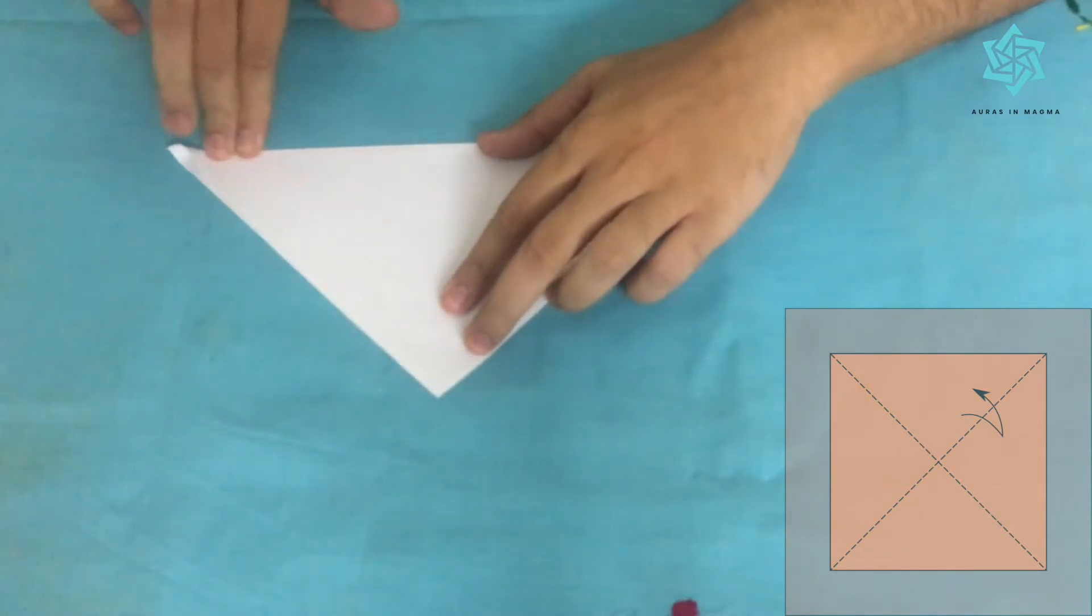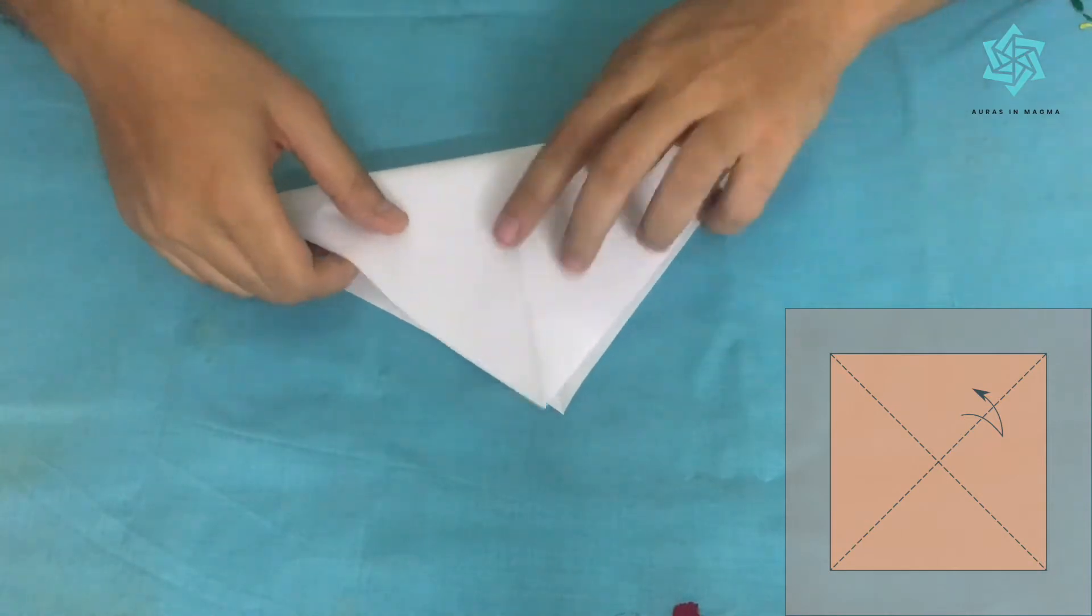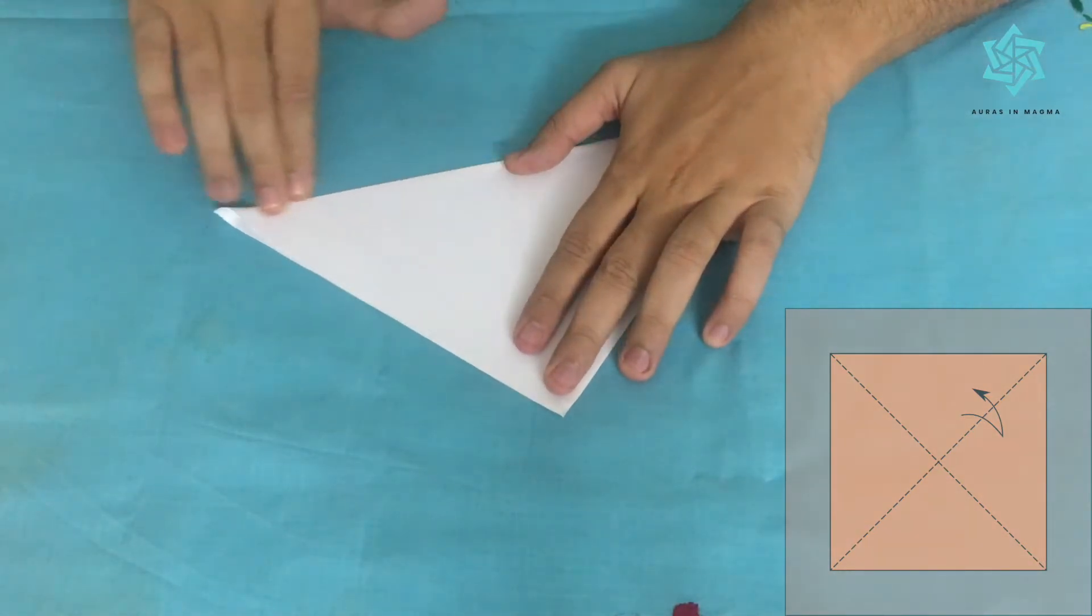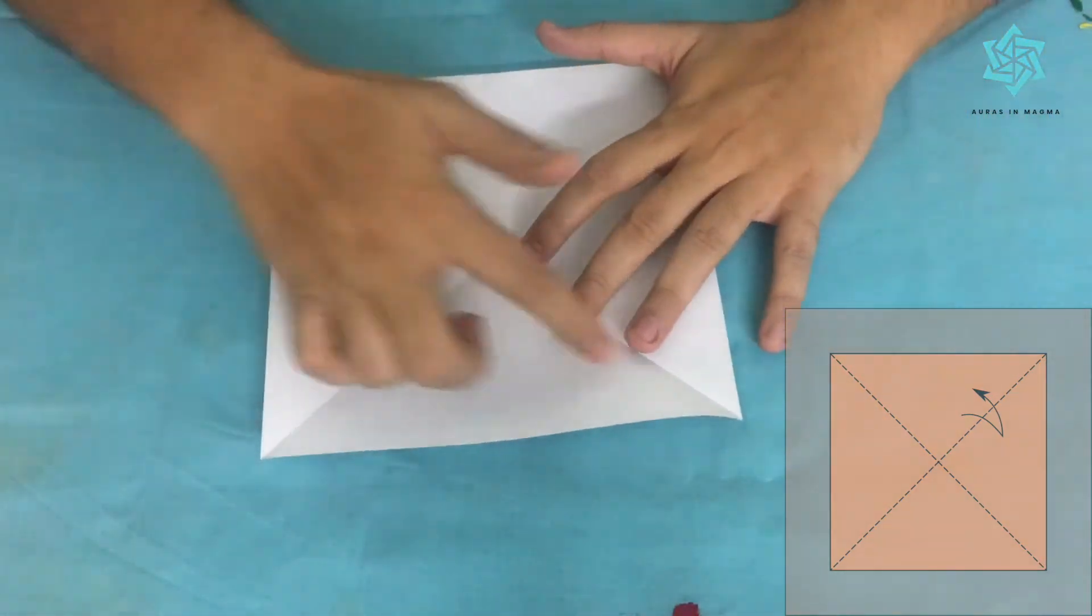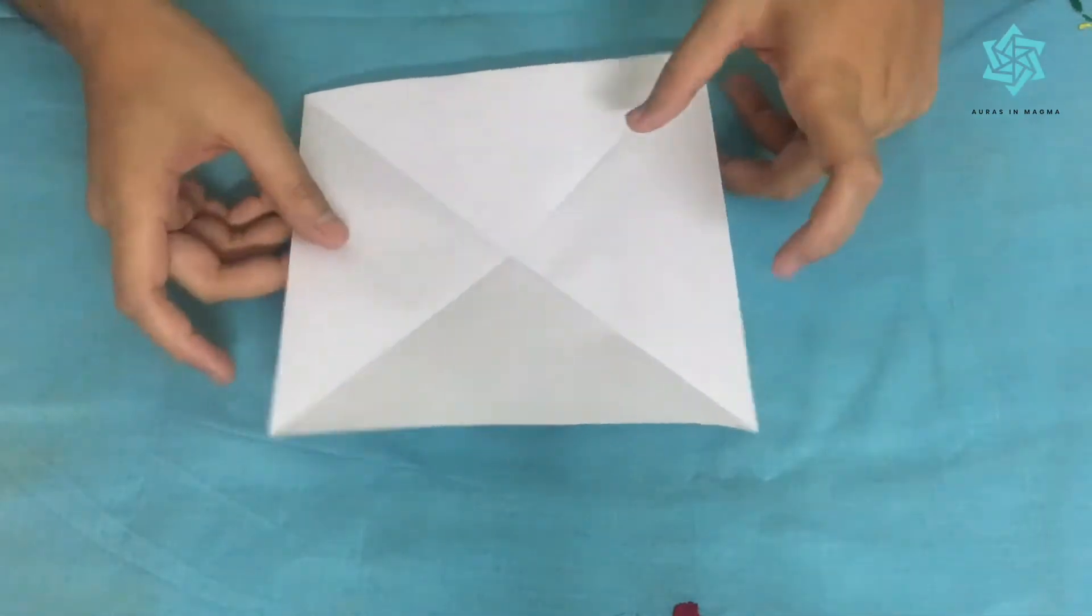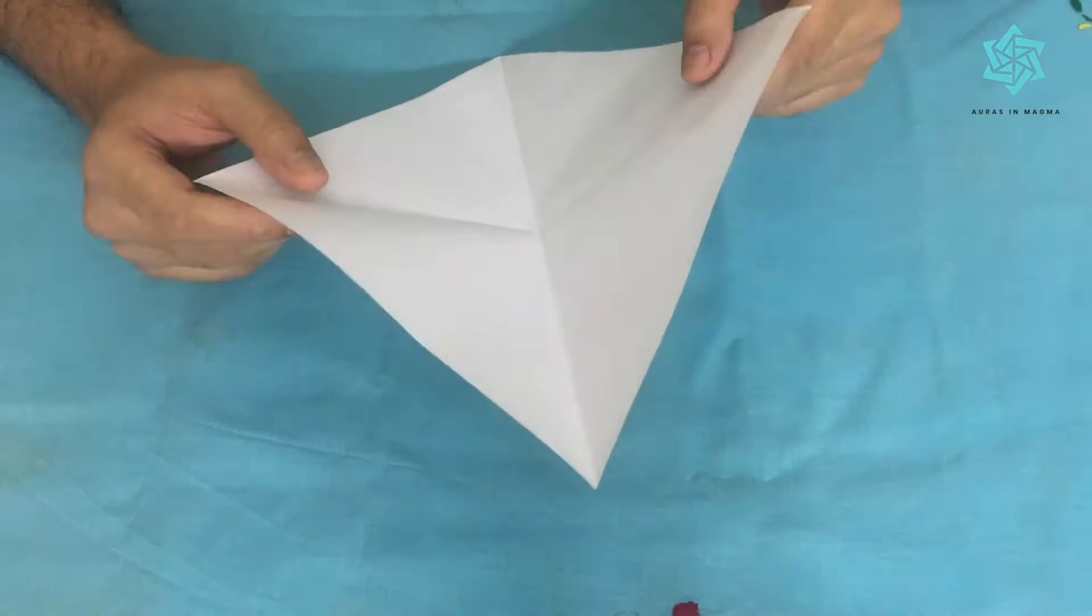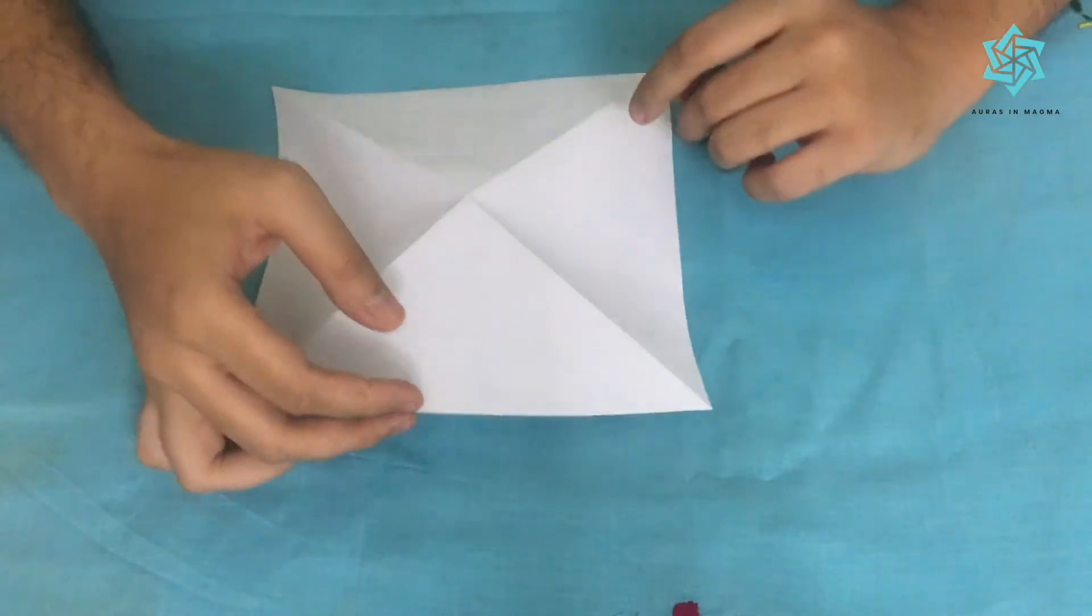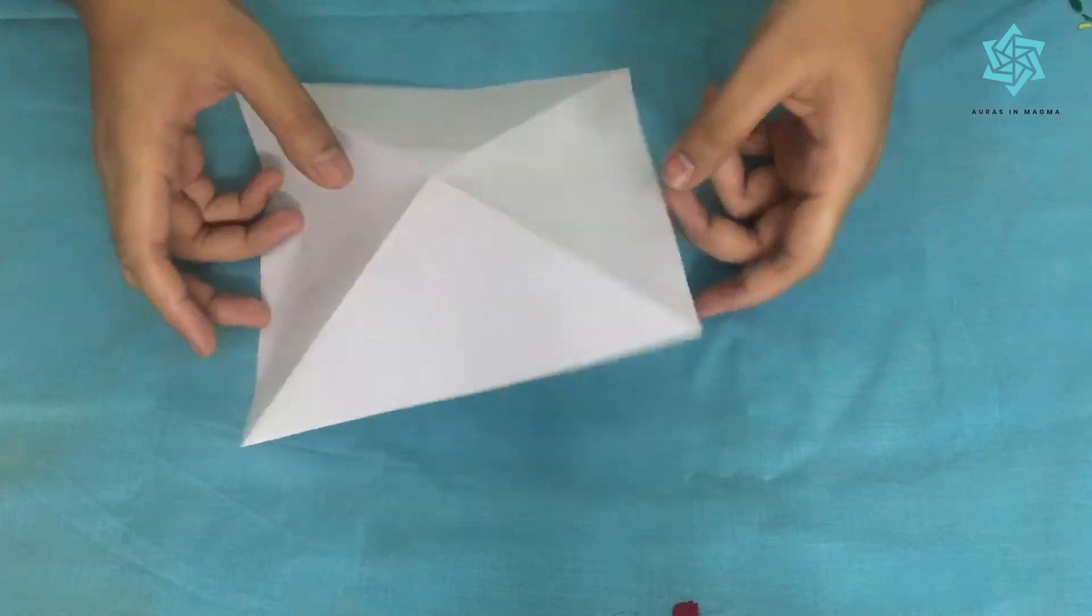Similarly we do it for the other corner, and there we go. We all can see this cross which has come up on this paper. Now because I was folding in this direction, you all can see that this becomes a valley. If I turn this over, the same thing becomes a mountain. So these are valley and mountain folds, and a valley fold becomes a mountain if you turn the paper over.